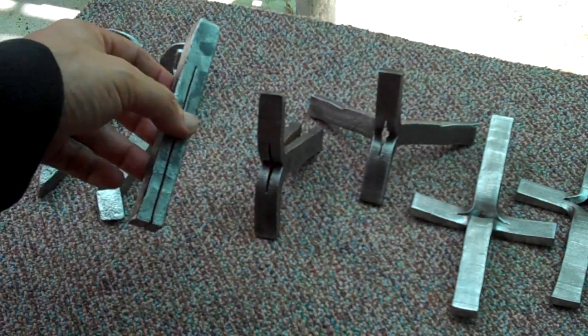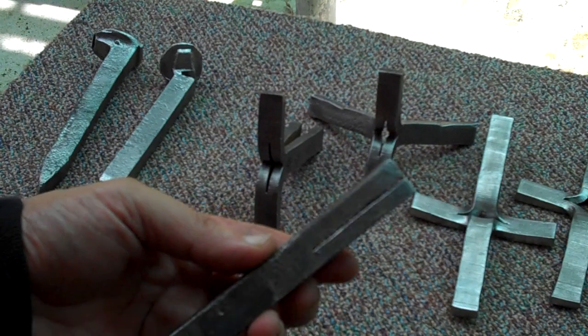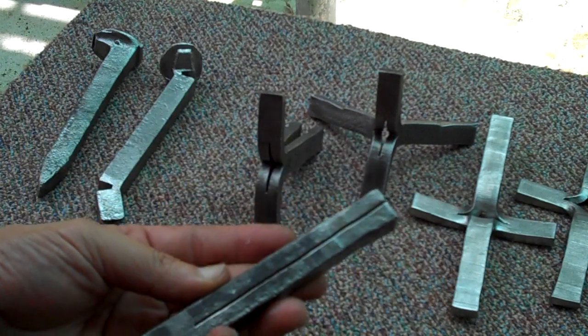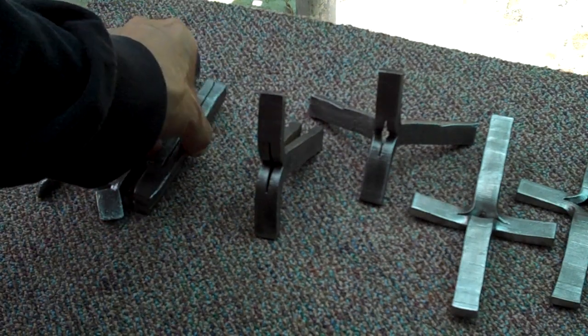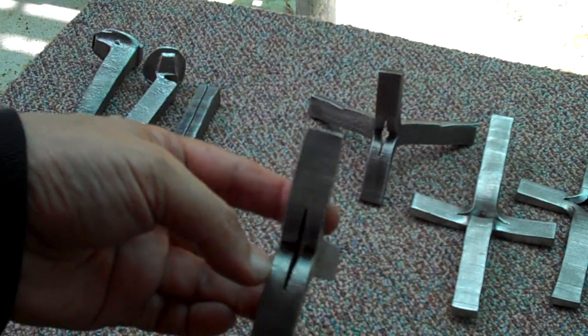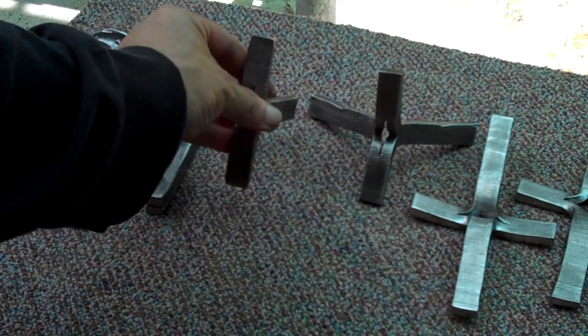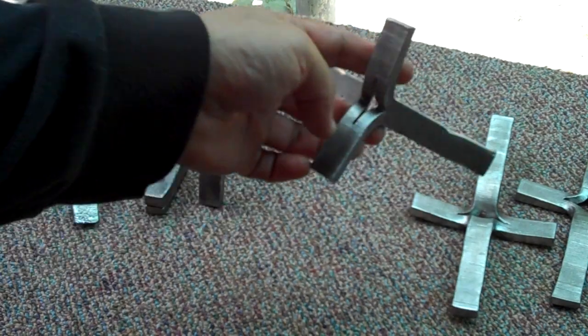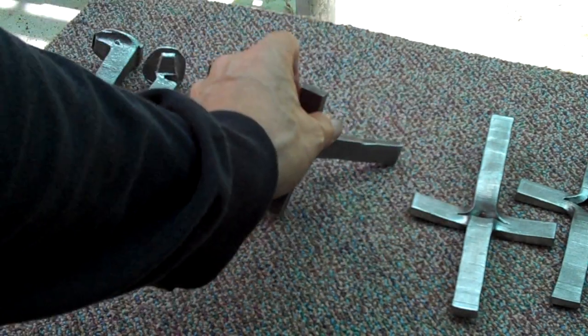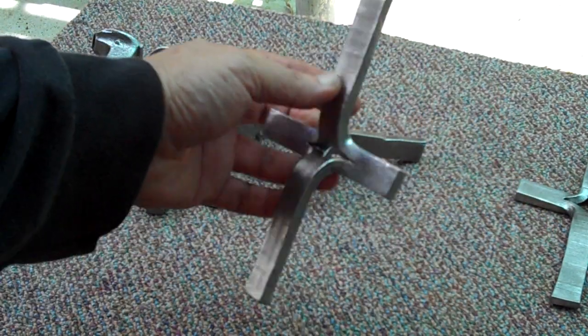And then the next thing that we did was we cut some slots in it. One long, one short one, and a long one. Then we heated it up. Remember? We split the short one first. Then we split the long one. Then we started to make it look like a cross.